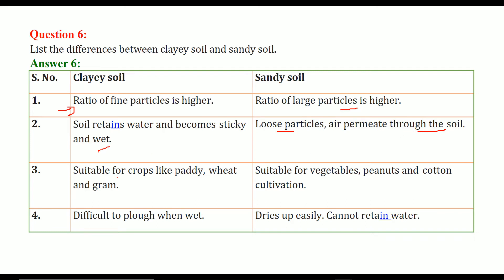In clay soils this is suitable for crops like paddy, wheat and gram. In sandy soil it is suitable for vegetables, peanuts and cotton cultivation. In clay soil it is very difficult to plow when it is wet having water in it. But because it is a sandy soil this dries up quite easily and it cannot retain water.